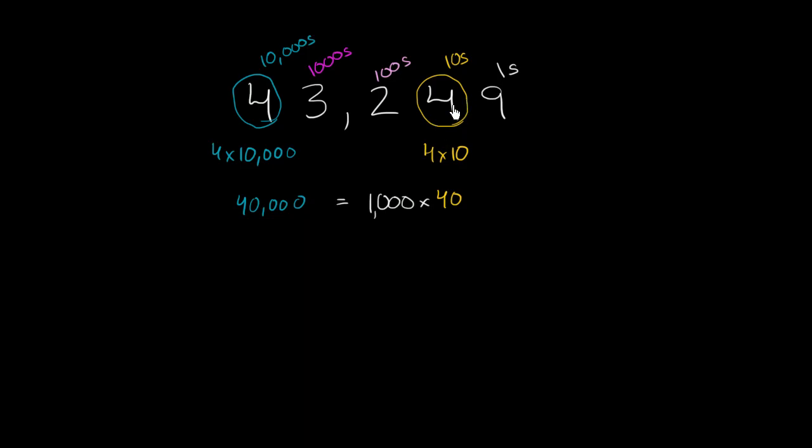Now, another way of thinking about it is every time you move place values to the left, as you see here—this is tens, hundreds, thousands, ten thousands—you're increasing what those place values represent by a factor of 10.